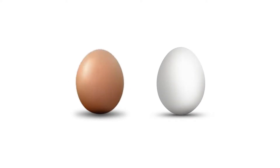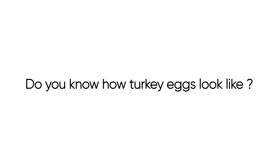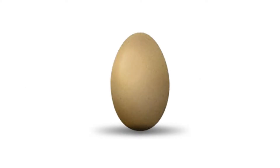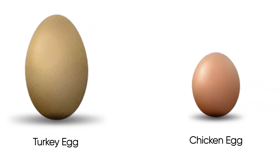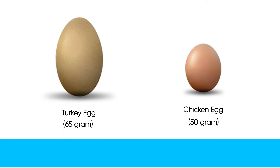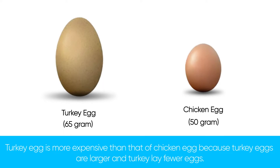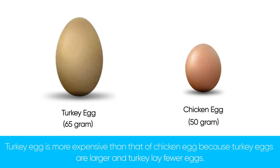We all know how chicken eggs look — some white and some brown. But turkey eggs are slightly bigger than chicken eggs and have brown patches. The egg on the left is a turkey egg and on the right is a chicken egg. The average turkey egg weighs 65 grams whereas the average chicken egg weighs about 50 grams. Turkey eggs are usually more expensive than chicken eggs because they are larger and turkeys lay fewer eggs than chickens.